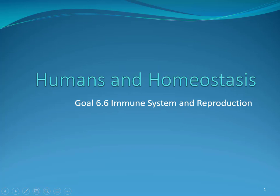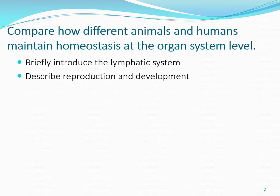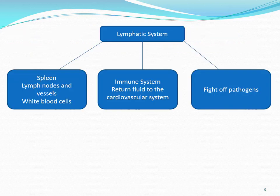This is the very last module for Goal 6. It's briefly going to introduce the lymphatic system and the reproductive system. The first is the lymphatic system, and the spleen is really the only organ or anatomy part of the lymph system.